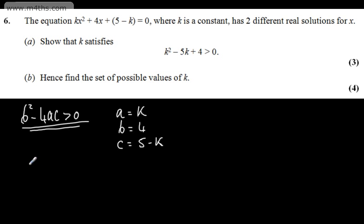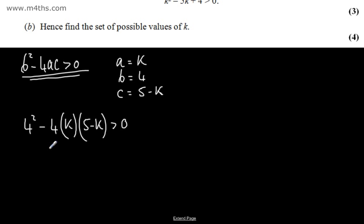So using the discriminant, we can say that b squared, that's going to be 4 squared minus 4 lots of A, which is k multiplied by c, which is 5 minus k, will be greater than 0. I'm just going to divide this through by 4, and we can say that 4 minus k multiplied by 5 minus k is greater than 0.